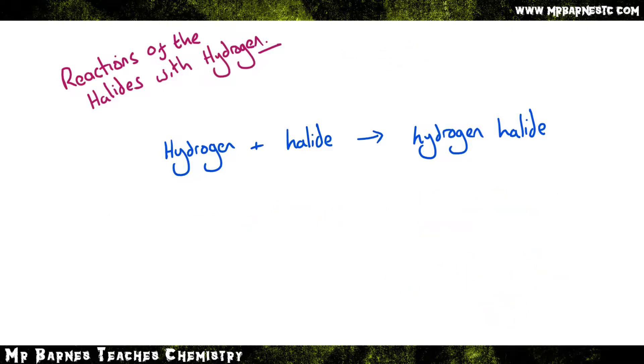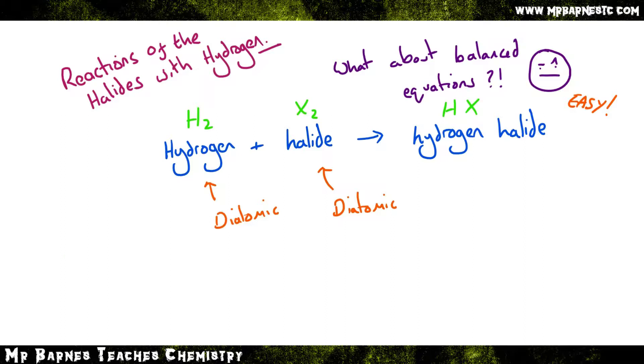When you talk about the balanced equations, however, it does get a little bit more complicated, but if you remember a few key things, it's quite simple again. Now we've talked about this in previous videos, but hydrogen is always diatomic, so it goes around in pairs, and so are your halides. Every halogen goes around in pairs. The hydrogen halides always go around singularly—you'll have one hydrogen and one halide. So it gives you the general formula H2 plus X2 goes to HX.